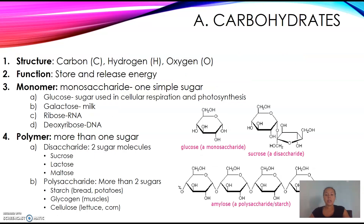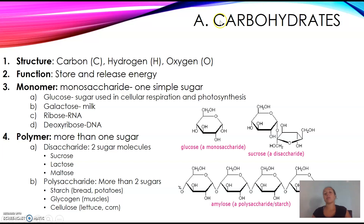Starting with carbohydrates: for each macromolecule I've organized it by structure, function, monomer, and polymer. The three elements that make up carbohydrates are carbon, hydrogen, and oxygen. The function is to store and release energy. During cellular respiration, for instance, we take that sugar, break it down, and use it for ATP or energy. The monomer — the small piece — is one glucose molecule, called a monosaccharide. Mono means one, saccharide means sugar: one simple sugar.